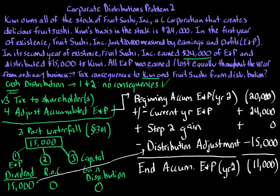In summary, the consequences to Kiwi: the $15,000 distribution is entirely a dividend, and her $24,000 stock basis remains unchanged. For Fruit Sushi Inc., the ending accumulated E&P is negative $11,000, which becomes the beginning accumulated E&P for next year. Please make sure to watch the next problem sets, as every problem introduces a new principle.